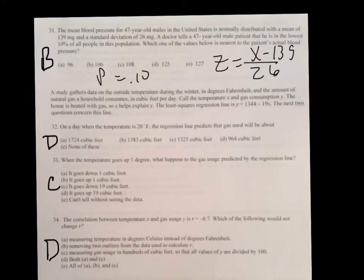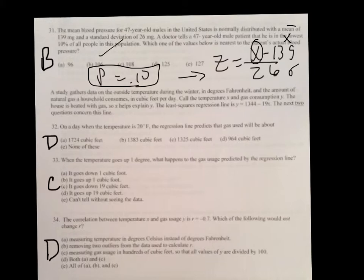On number 31, it's asking which of the values below is nearest to the patient's actual blood pressure. Well, first of all, it gives you the X bar. It gives you standard deviation. But, it doesn't give you the X. That's what you're looking for. Now, it does give you the P value because it says the lowest 10%. Well, what you're going to do is you're going to use that 10% and convert it to a Z score. And then, once you do that, you're going to solve for X. In this case, the answer is going to be 106.